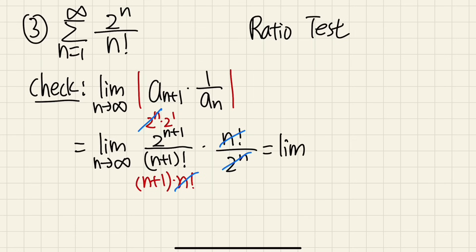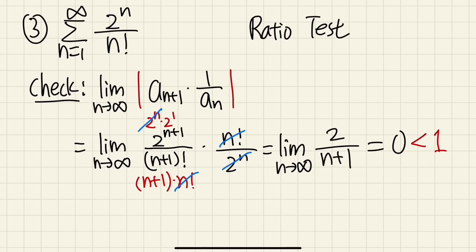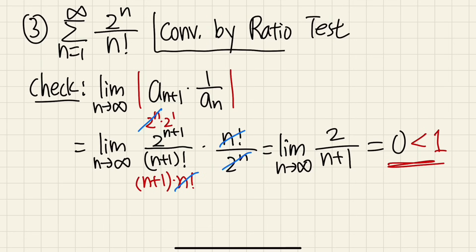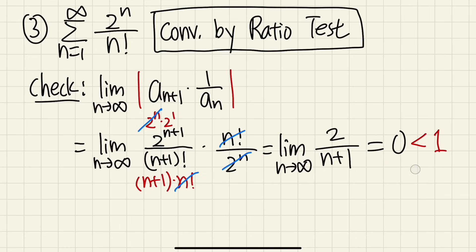The limit is 0. For the ratio test, we must say this limit is less than 1 — we use 1 as our comparison. Since 0 < 1, this series converges by the ratio test. If the limit were greater than 1 the series would diverge; if equal to 1 we would have to choose a different test.